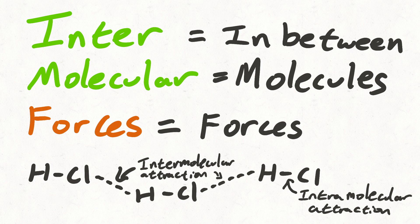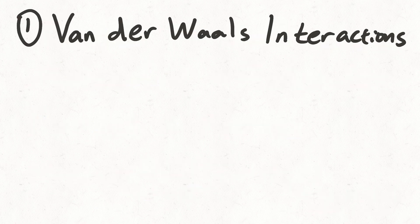There are three main types of intermolecular bonds that you need to know about. Starting from weakest to strongest, we have van der Waals interactions, also known as instantaneous dipole, induced dipole interactions.